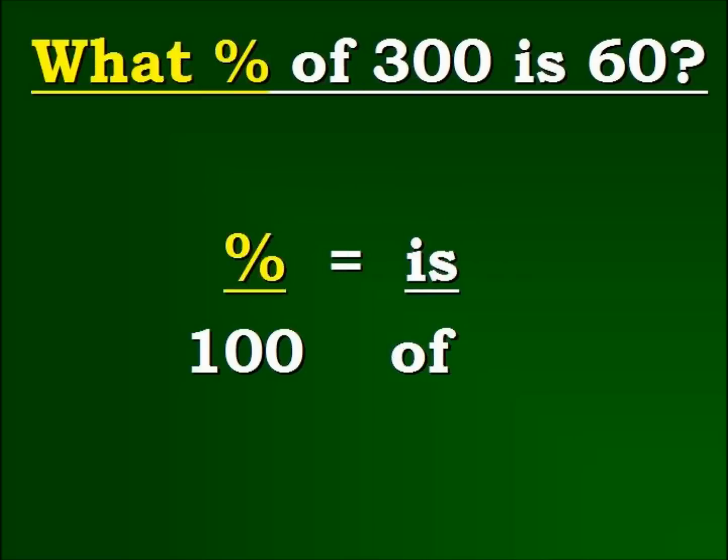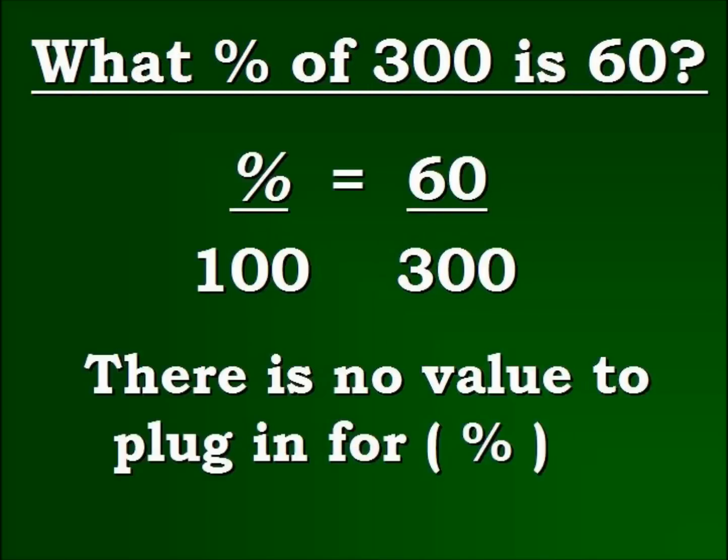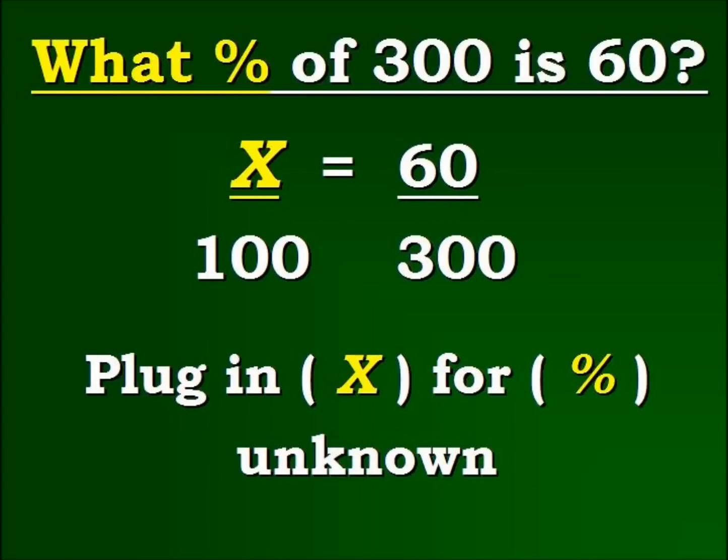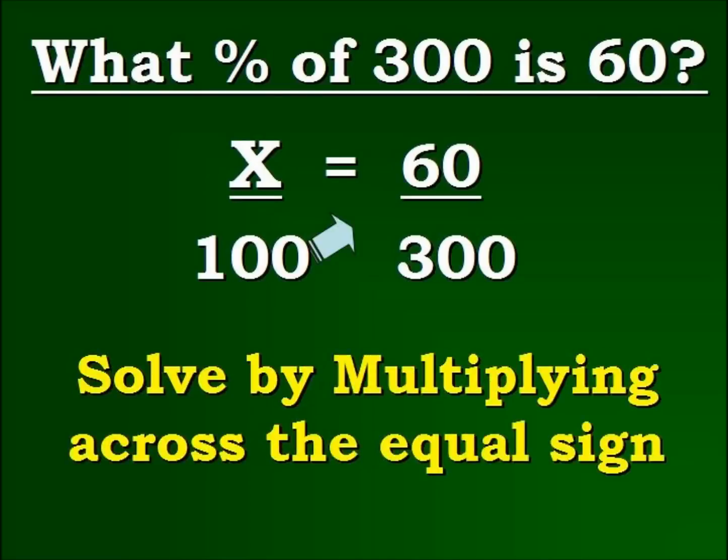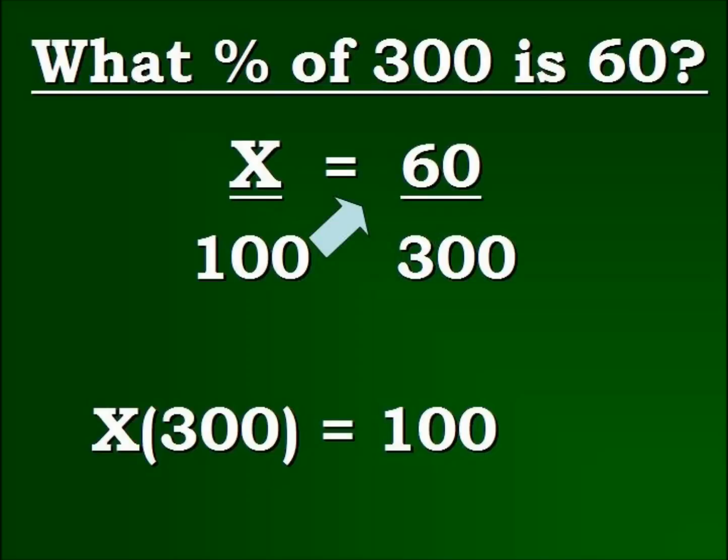Since there's no value to plug in for the percent right here in the formula, we're going to put an X there, and that's going to be our unknown that we're going to solve for. Now that we've plugged everything into our formula, we're going to cross-multiply to solve for the unknown. This diagram will show exactly how we're going to do that. We're going to start with the X. We're going to multiply that into the 300. We're going to put our equal signs in there. We're going to go with 100 and multiply that into the 60.